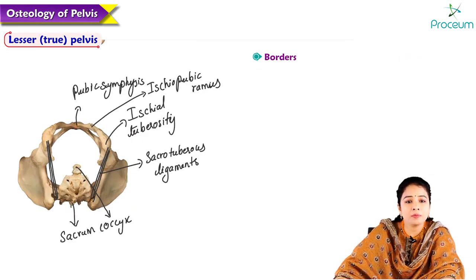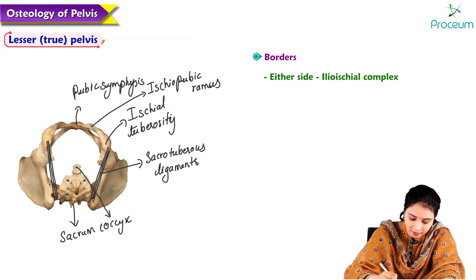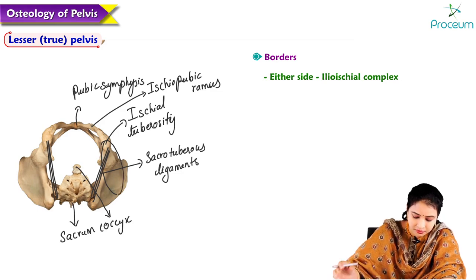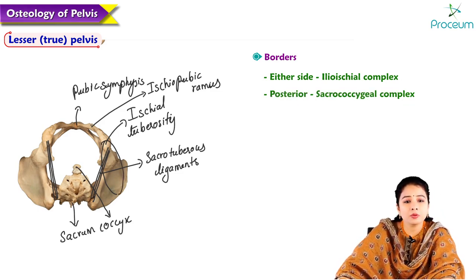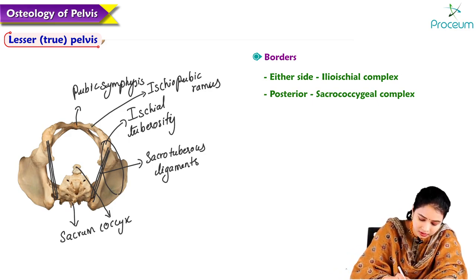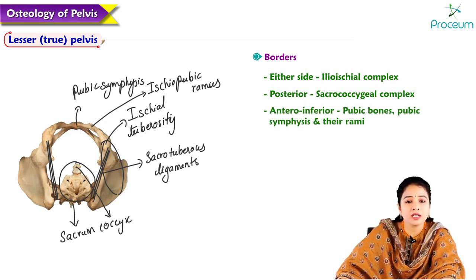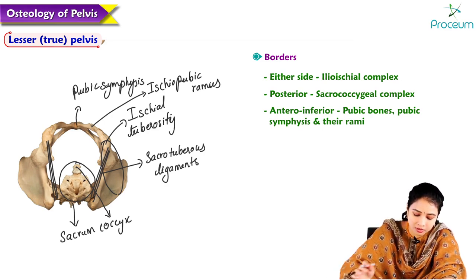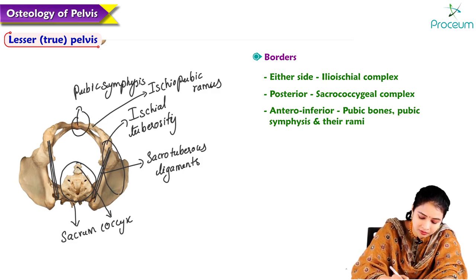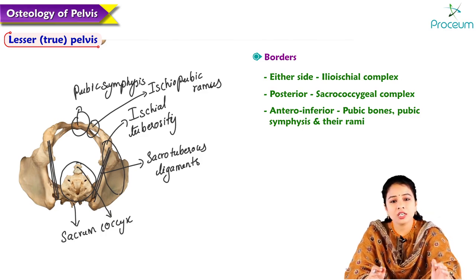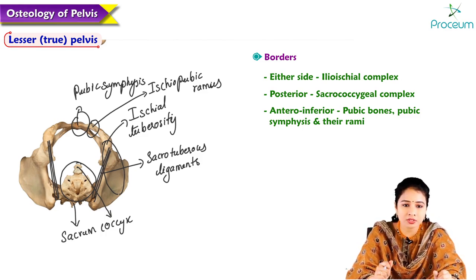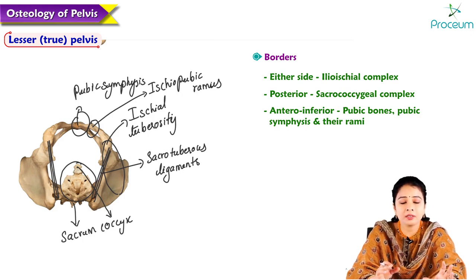The lesser pelvis is bounded on either side by the ilio-ischial complex (between ilium and ischium), posteriorly by the sacrococcygeal complex, and anteriorly and inferiorly by the pubic bones, pubic symphysis, and rami. The lesser pelvis is bounded all around by bones, unlike the greater pelvis, where anteriorly only the anterior abdominal wall takes part in its formation.